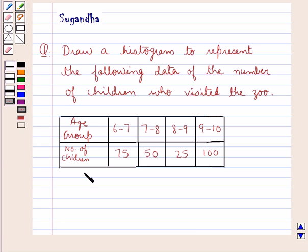We are given a table in which we have the age group of the children who visited the zoo and the number of children of each age group who visited the zoo. For the age group of 6 to 7 years, the number of children who visited the zoo were 75.